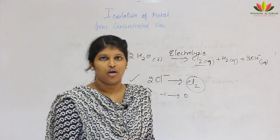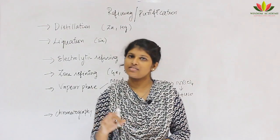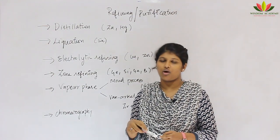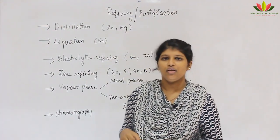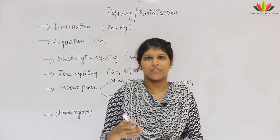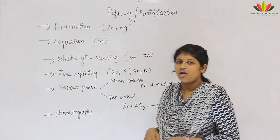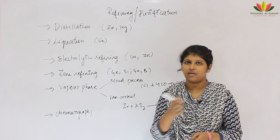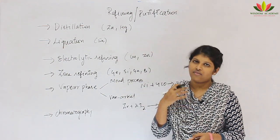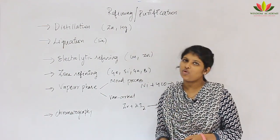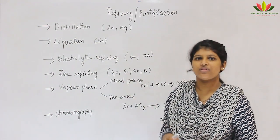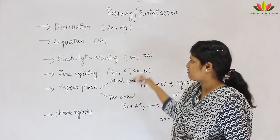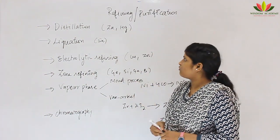The third step is refining or purification of metals. After preparing the metal from concentrated ore, the metal will not be 100% pure because many chemical reactions have been done and reagents or impurities may remain. So the last step is refining or purification of metals. We have six methods and we will see them one by one.